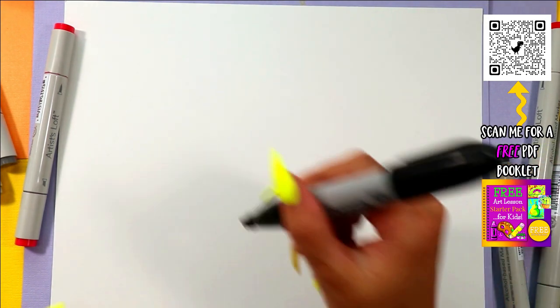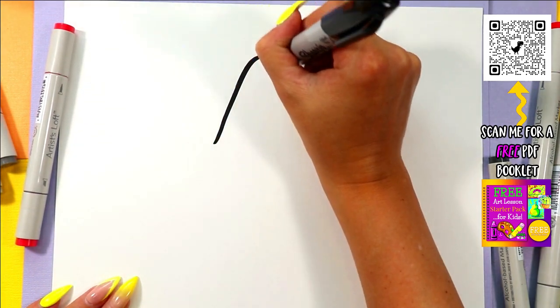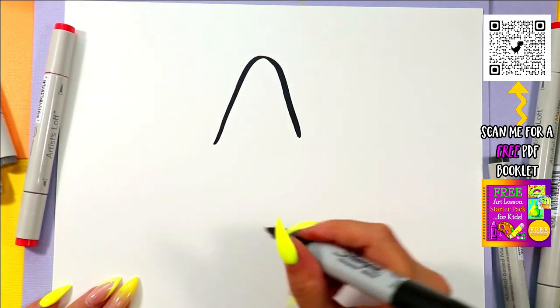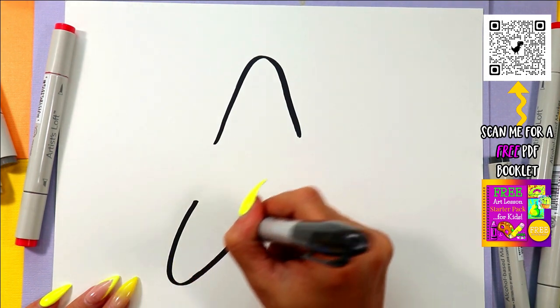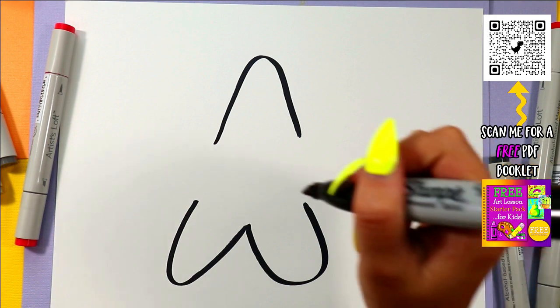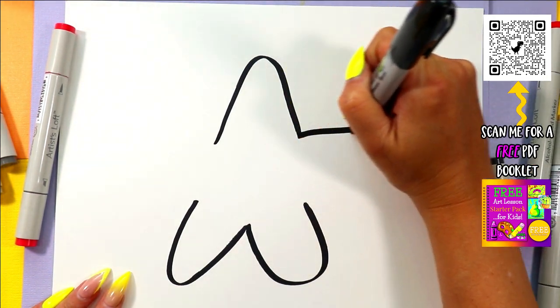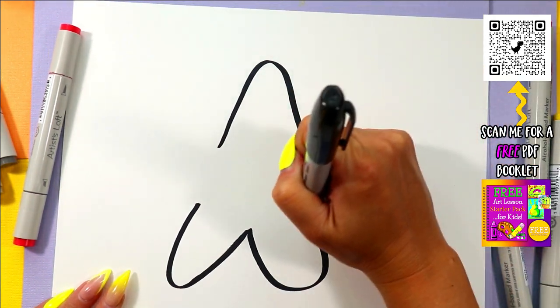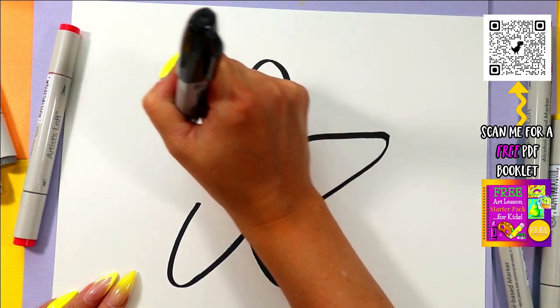Alright, we are going to do a starfish today. We are going to start off with one curving line up and two below. Kind of like a W at the bottom. On either side, we're going to draw some arms.